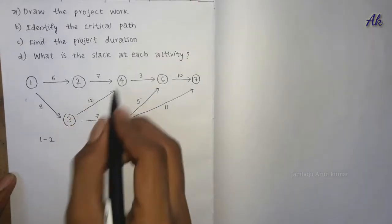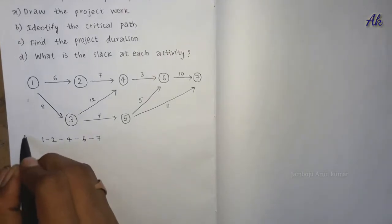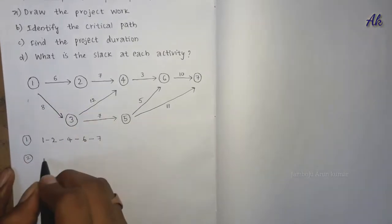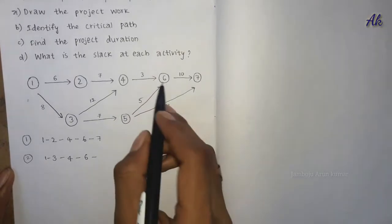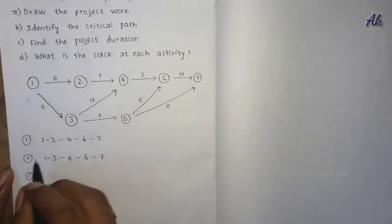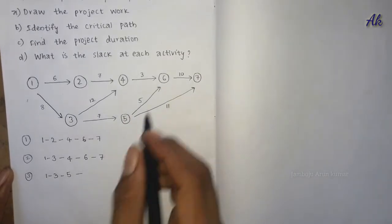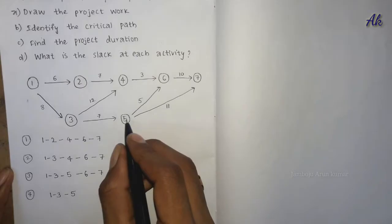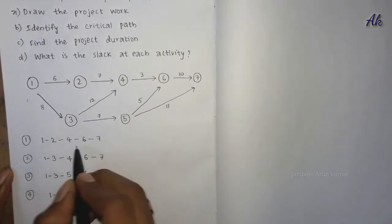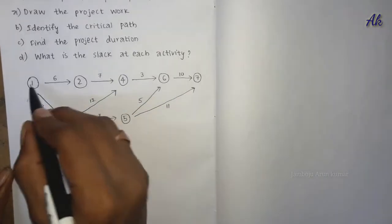Next, we write all the possible paths through the network. Path 1 is 1→2→4→6→7. Path 2 is 1→3→4→6→7. Path 3 is 1→3→2→5→6→7. Path 4 is 1→3→3→5→7. Now we need to find the time taken for each of these paths.